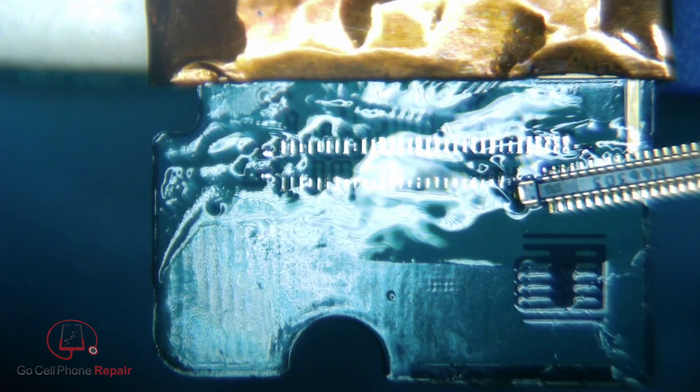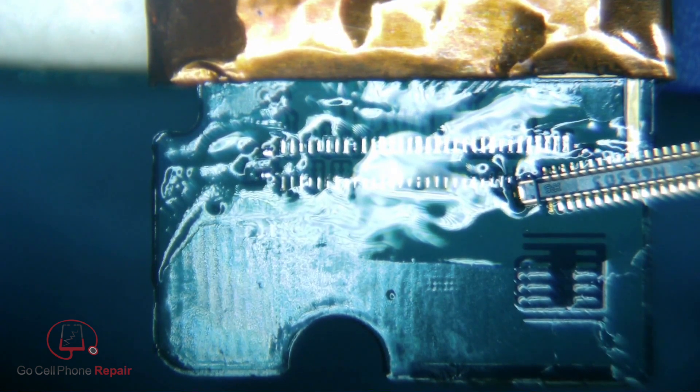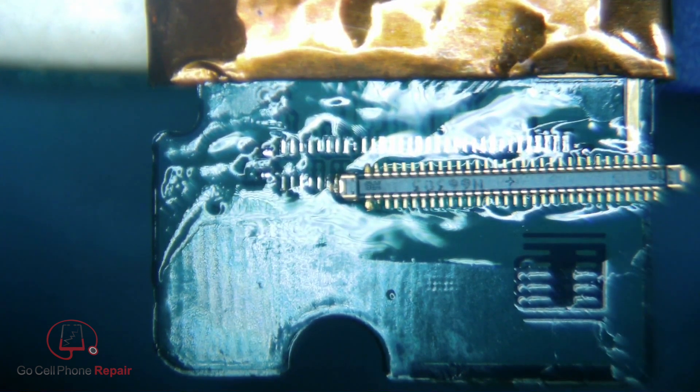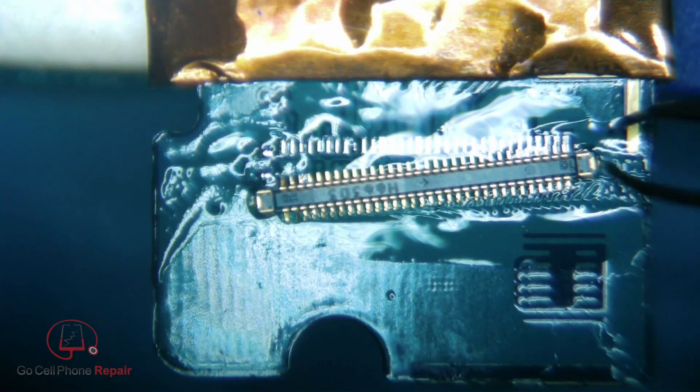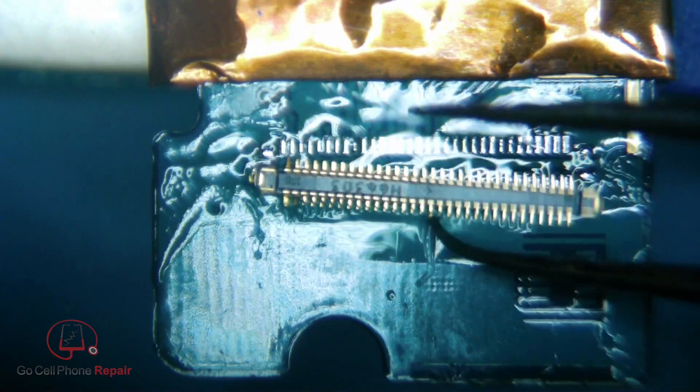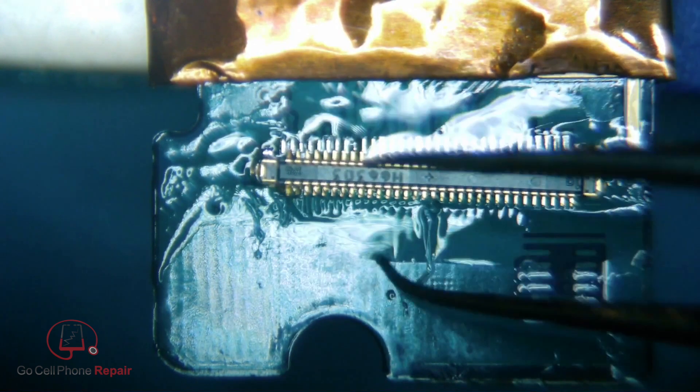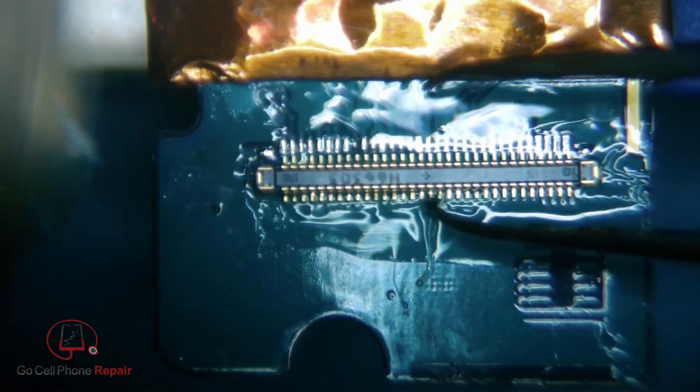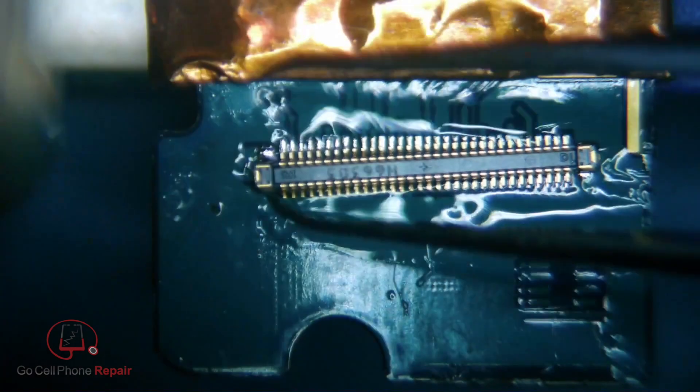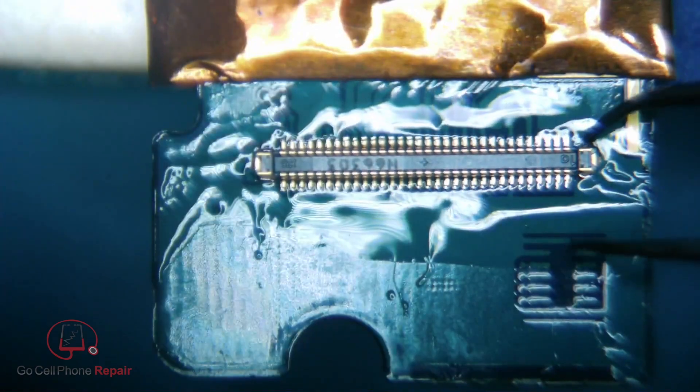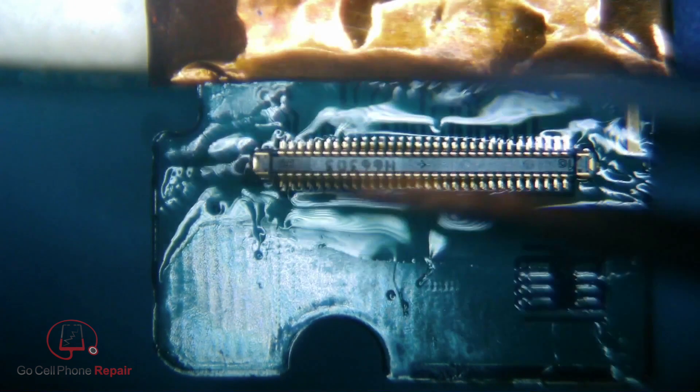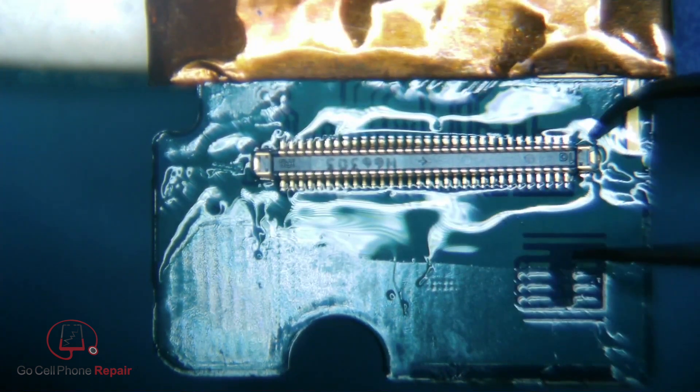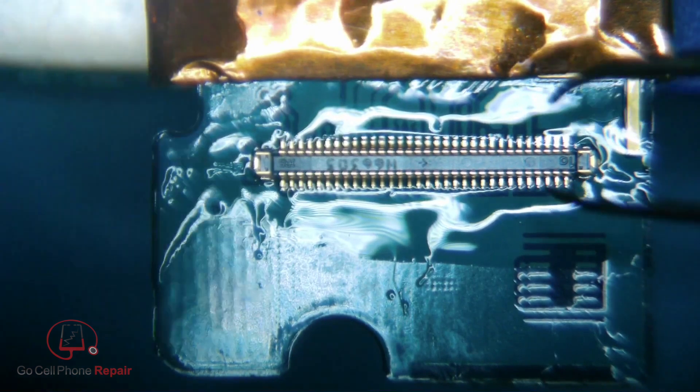So we're going to set this down as close as we possibly can to where we want it to end up. And if your flux is a little sticky, just go ahead and warm it up. And once it liquefies, you should be able to maneuver this a little more accurately. And that's right about where we want to be.